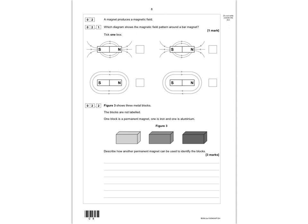Question 2: a magnet produces a magnetic field. Which diagram shows the magnetic field pattern around a bar magnet? Remember that field lines show the direction a north pole would move — they move away from the north pole and are attracted towards the south. So you want arrows going away from north and attracted to south — that is the correct diagram.